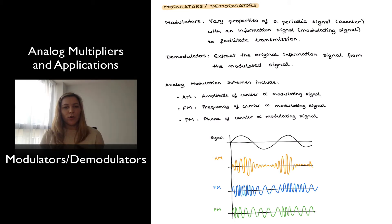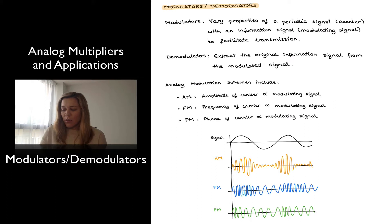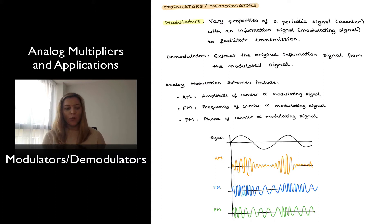Hello. In this video we are going to talk about another application of analog multipliers, and that is in the modulation and demodulation of signals. The modulation of a signal consists of varying the properties of a periodic signal, known as the carrier signal, with an information signal, referred to as the modulating signal, in order to facilitate the transmission of the information contained in the information signal.